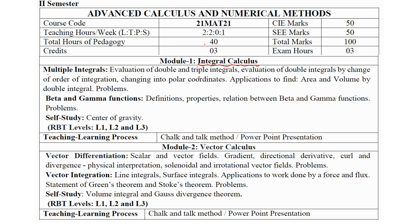Here in the syllabus, you have multiple integrals and another topic called beta and gamma function. If you are not able to solve the problems on multiple integrals, you can leave that topic. If you concentrate only on beta and gamma function, you can score a minimum of 7 marks.